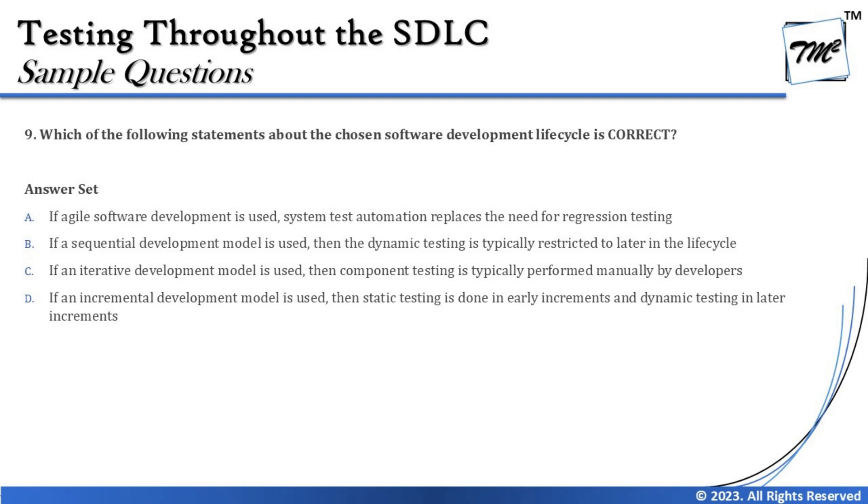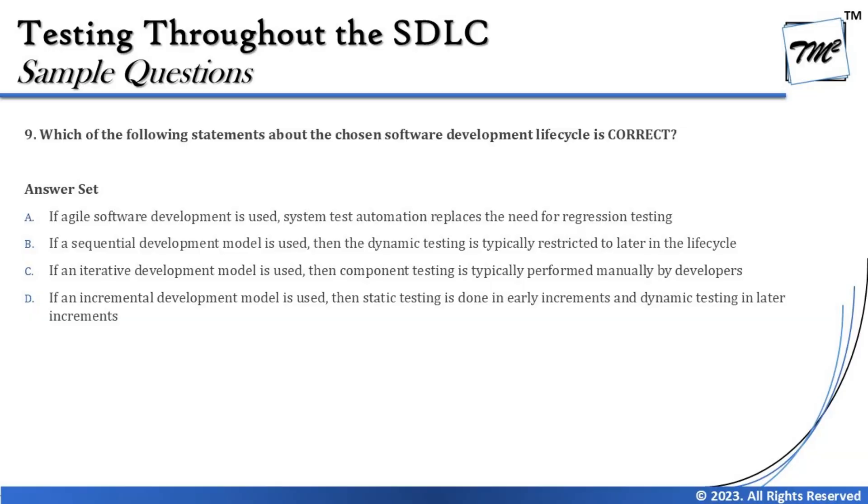Option A says: if agile software development is used, system test automation replaces the need for regression testing. Your generic understanding about testing helps here — no type of testing, whether manual or automated, whether in sequential or agile, can replace the need for regression testing. Changes happen through defect fixes, environmental changes, and other factors, so regression testing is always needed regardless of development model or automation level. A is not the right answer.